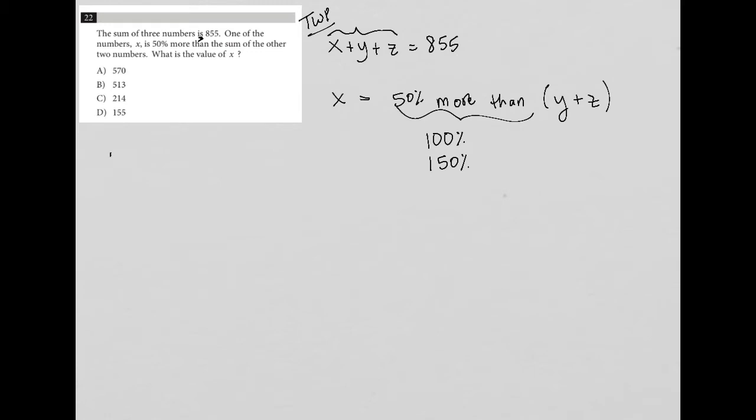I'll prove that. If you have two, 150% of that is multiplying by 1.5, which gives you three. Three is 50% more than two. We got that by multiplying by 1.5, so I'll do the same thing here.